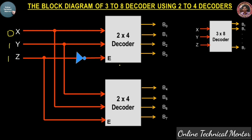Let's take another example: x=0, y=1, z=1. Since z=1, the inverted signal gives 0 at the upper decoder's enable, so the upper decoder is disabled and all its outputs are zero. Since z=1 is directly connected to the lower decoder's enable, that decoder is enabled. For x=0, y=1, output b6 becomes 1 and all other outputs remain zero.